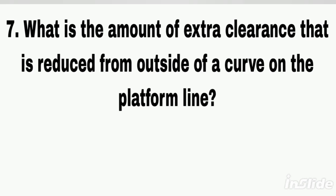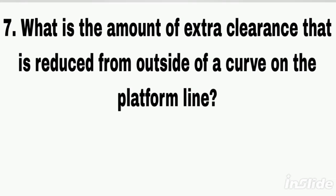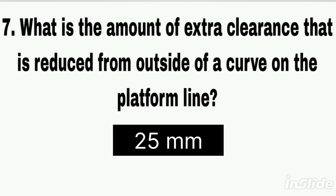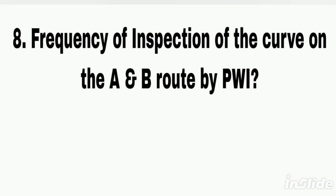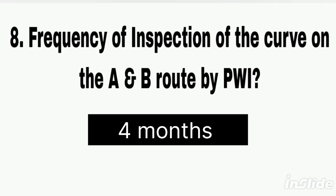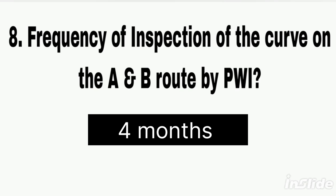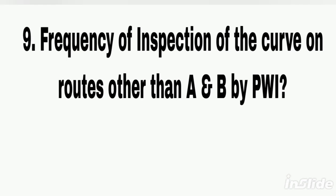Q7. What is the amount of extra clearance that is reduced from outside of a curve on the platform line? Answer: 25 mm. Q8. Frequency of inspection of the curve on A and B route by PVI. Answer: 4 months.